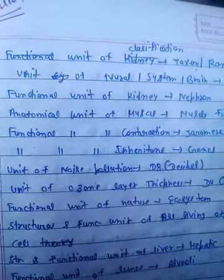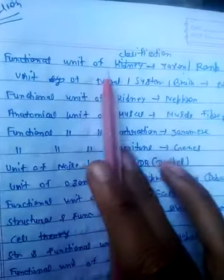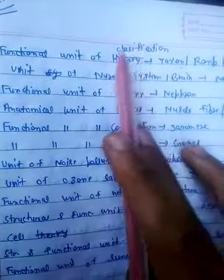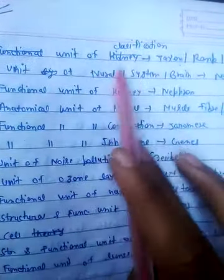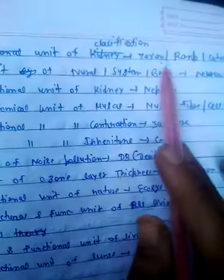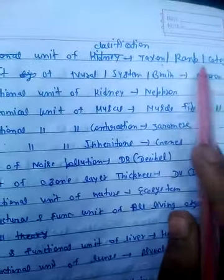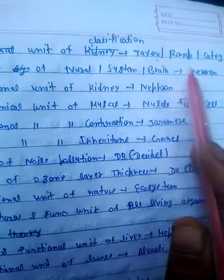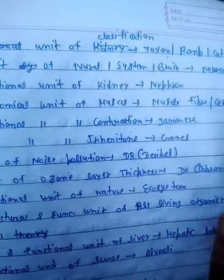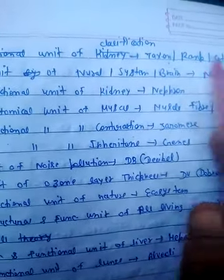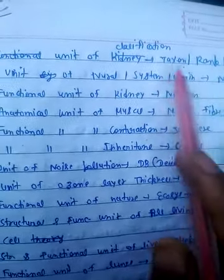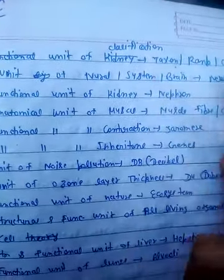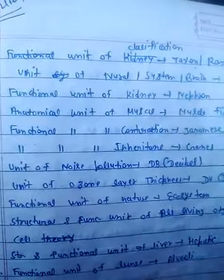The first question is: unit of classification. The unit of classification is called taxon. It is also called rank and also category. All three names refer to the unit of classification.